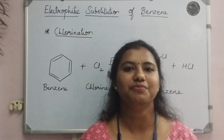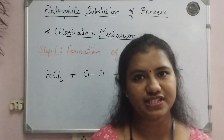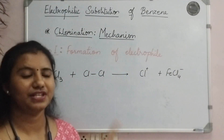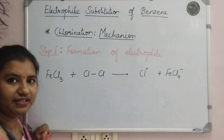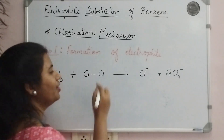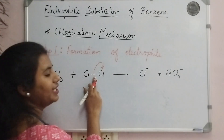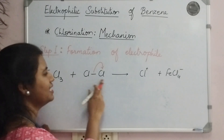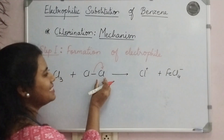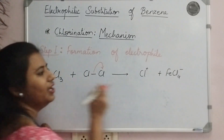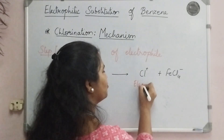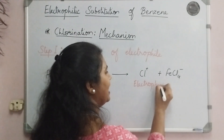Now let's understand the mechanism for this reaction. In the first step of the mechanism, we are going to form our electrophile. What happens here is, in the presence of FeCl₃, the chlorine molecule goes through heterolytic fission, where both the electrons are put on one of the chlorine atoms. A Cl⁺ is formed, which is our electrophile, and the Cl⁻ will be accepted by FeCl₃, forming FeCl₄⁻. So here we have got our electrophile which will be used further in this reaction.